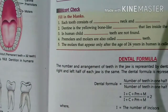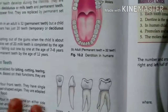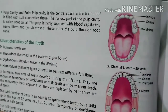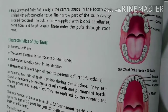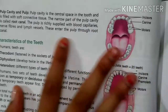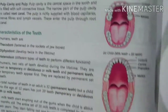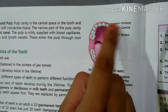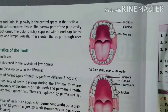The pulp cavity is a central space in our tooth and is filled with soft connective tissue and nerve fibers. Blood vessels and nerves enter the pulp through the root canal. In our teeth we have incisors, canines, molars, and premolars.